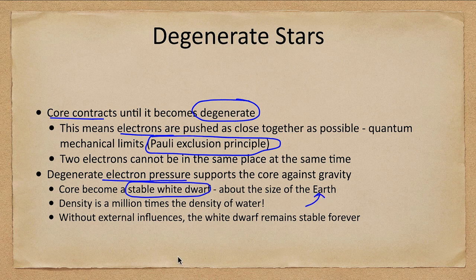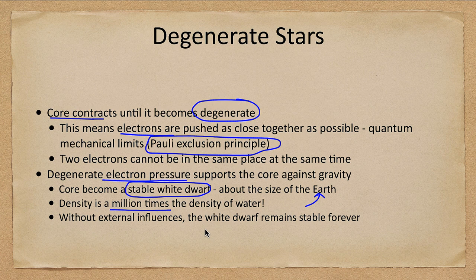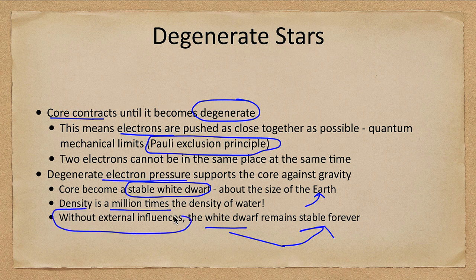It becomes a stable white dwarf — an object about the size of Earth but still with the mass of a star. The density is incredible: a million times the density of water, more dense than anything we can imagine here on Earth. This white dwarf is completely stable and will remain stable forever if there are no external influences. If it is a white dwarf star all by itself, it will just remain there and slowly cool off.